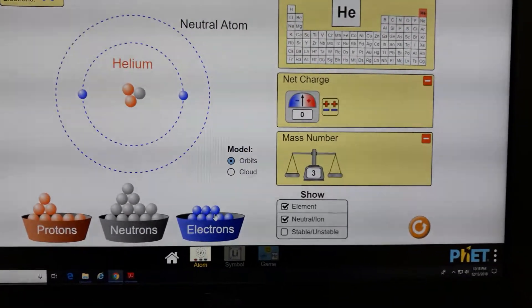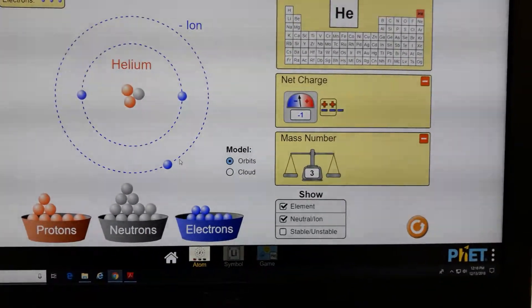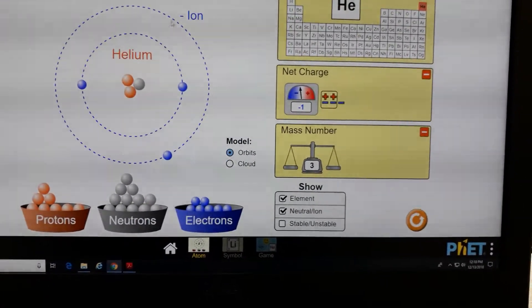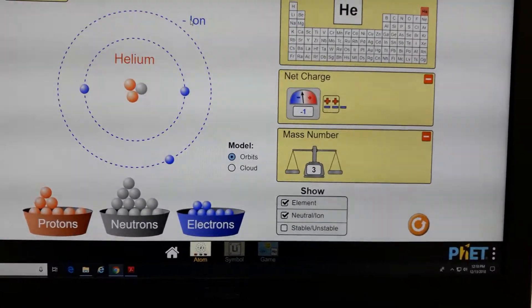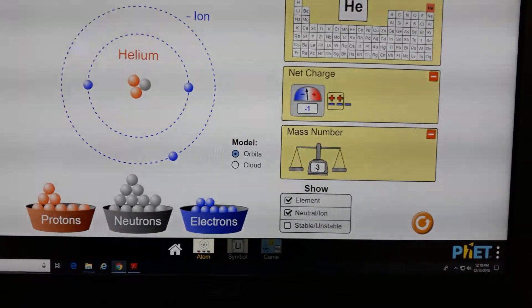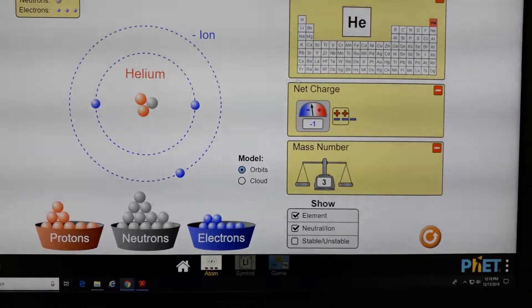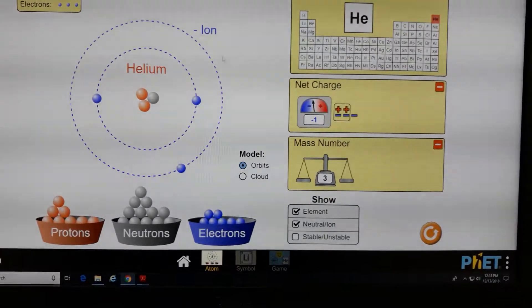If we add one more electron, now this becomes a negative ion. So it's still helium, but now it's a negative ion. You can see that the mass number is three, and the net charge is negative one.